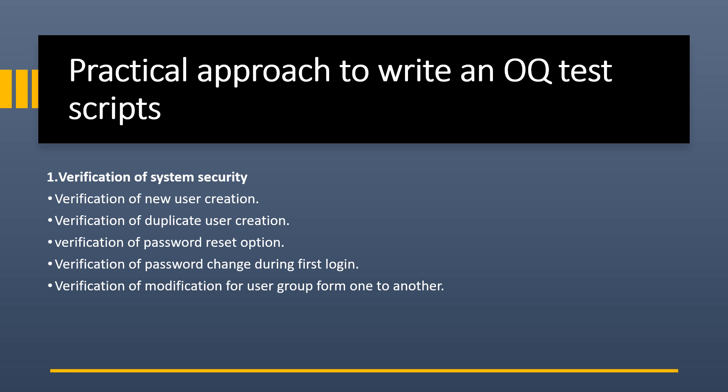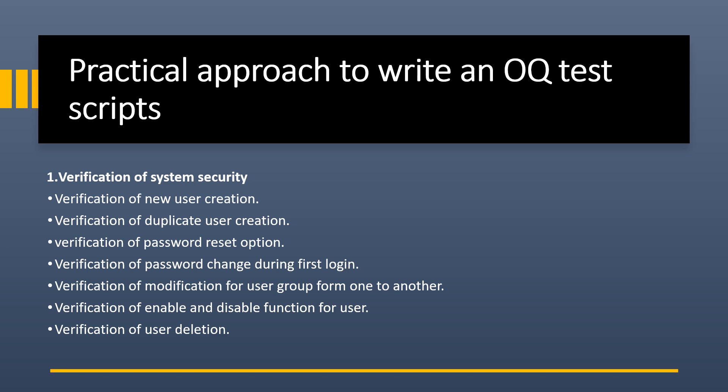Next is verification of modification of user group from one group to another — for example, changing a user from the operator group to the reviewer group. Next is verification of enable and disable function for users — you should be able to disable a user when authorization is no longer required. Next is verification of user deletion — the system should not allow deletion of any user account.